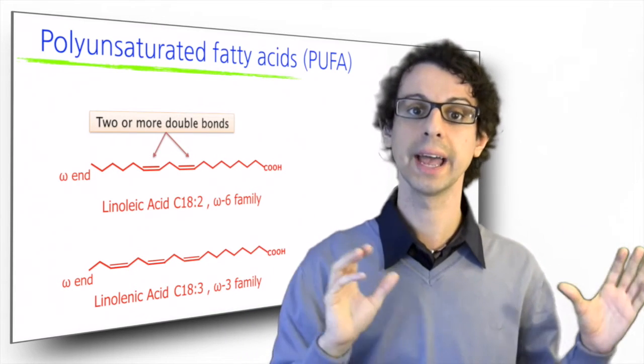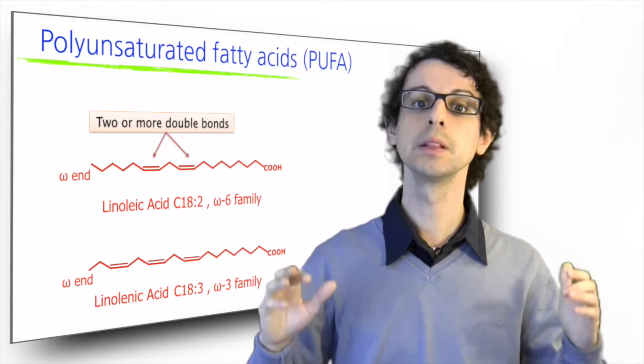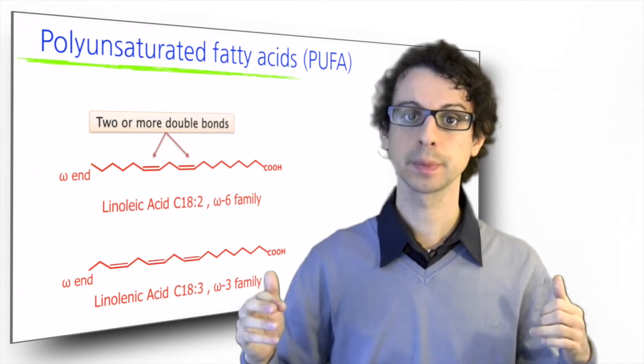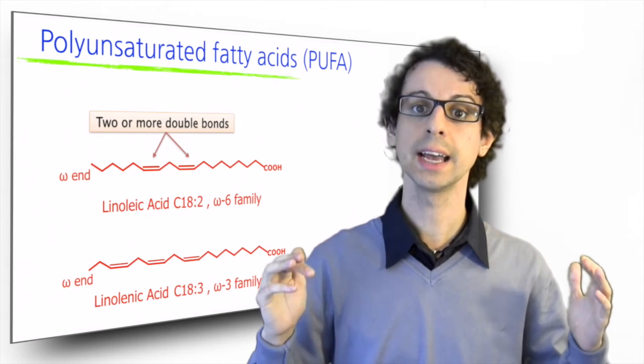If we count from the omega end, the first double bond is in position 6, so it belongs to the omega-6 family. It is 18 carbons long, so we can indicate it as C18-2 for two unsaturations.